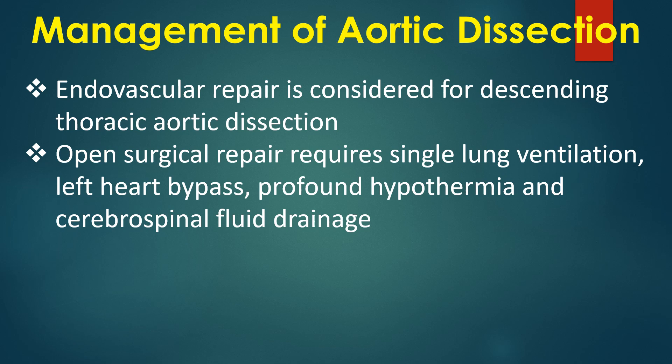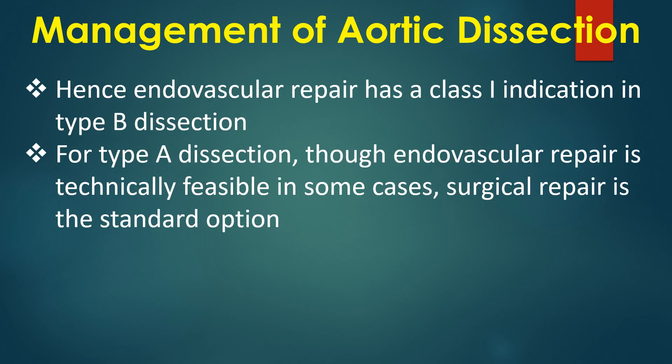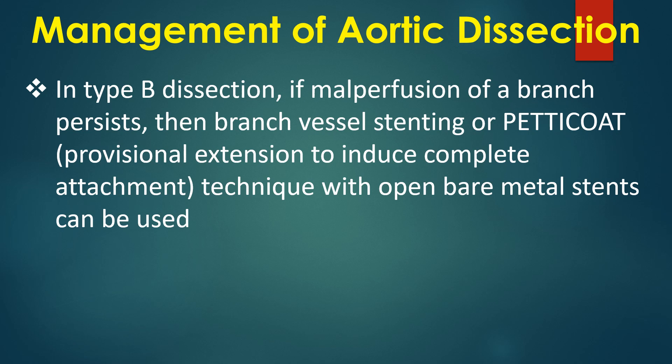Endovascular repair is considered for descending thoracic aortic dissection and carries a class I indication in type B dissection, given that open surgical repair requires single-lung ventilation, left heart bypass, profound hypothermia, and cerebrospinal fluid drainage. For type A dissection, surgical repair remains the standard option. In type B dissection with persistent malperfusion of a branch vessel, branch vessel stenting or techniques using open bare metal stents can be used.